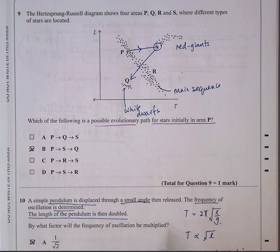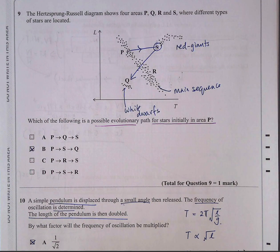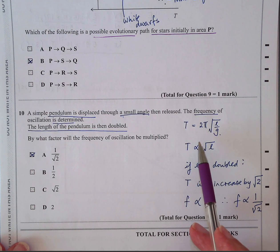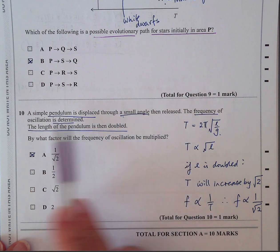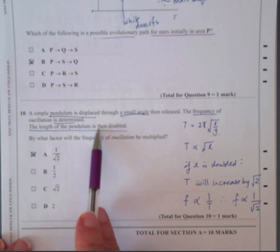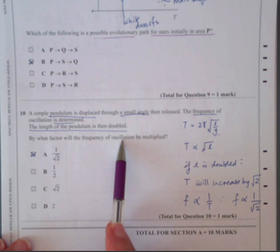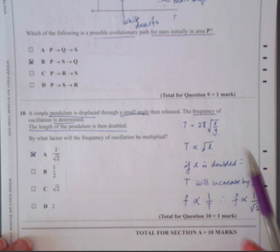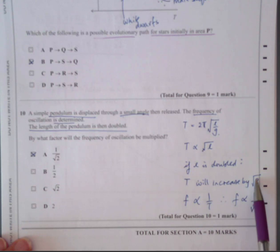Question 10, a simple pendulum is placed, is displaced through a small angle. Remember this equation only works if it's a relatively small angle because you want to keep air resistance negligible. The frequency of the oscillation is determined. The length of the pendulum is then doubled. By what factor will the frequency of the oscillation change? Well, the equation is t equals 2 pi root r over g. If the period is proportional to length, if the length is doubled, the period will increase by the square root of the double, so it'll be the square root of 2. And frequency is inversely proportional to t, so you've got to inverse the square root of 2. So frequency are proportional to the inverse of the square root of 2. And that gives you an answer A.